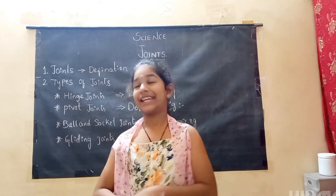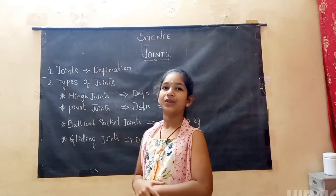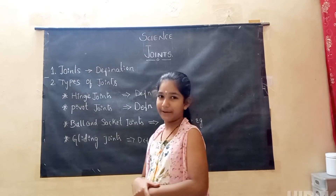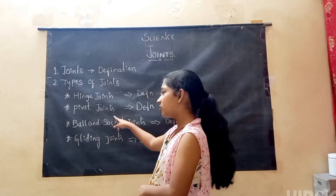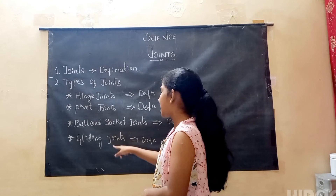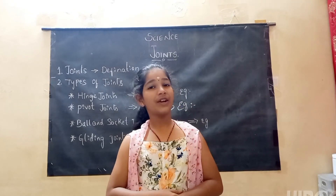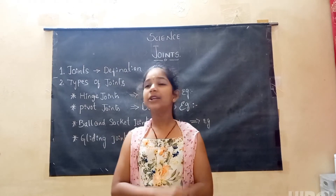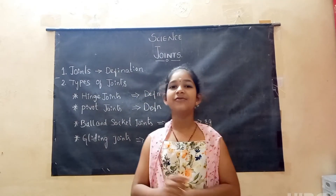So let's recall everything. Joints — I have told you the definition of joints. There are four types of joints: hinge joints, pivot joints, ball and socket joints, and gliding joints. I told all the definitions and examples for them.